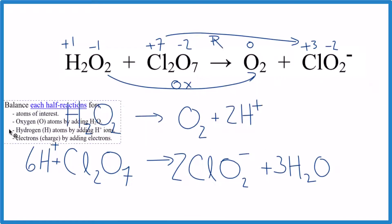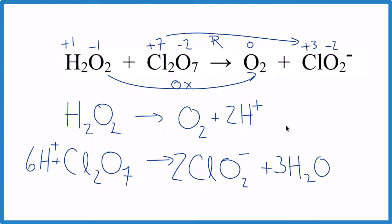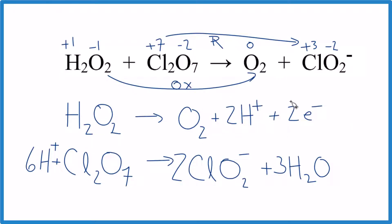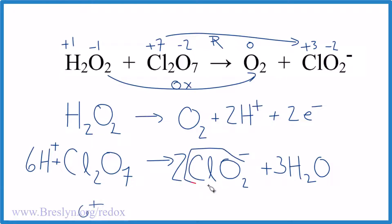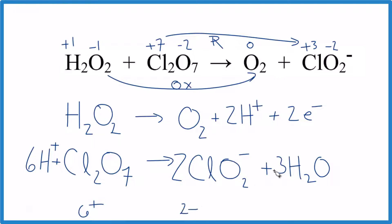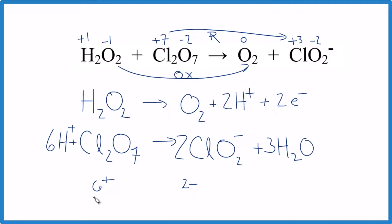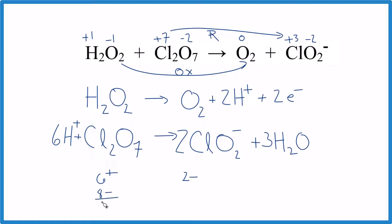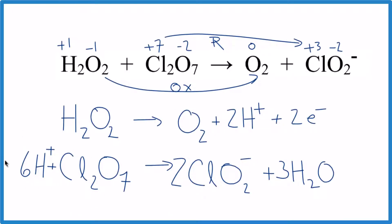Finally, we balance charge by adding electrons. For the oxidation half reaction, we have a two plus charge, so we add two electrons to give zero charge on both sides. For the reduction half reaction, we have six plus from the H⁺ ions, and two times one minus equals two minus from the ion, so we need eight electrons total — add eight electrons to balance the charge.